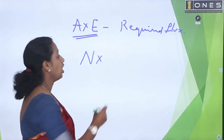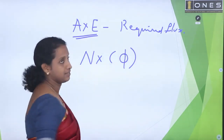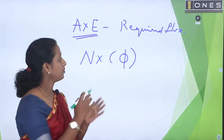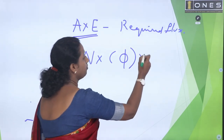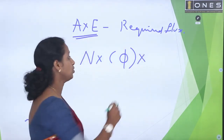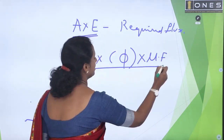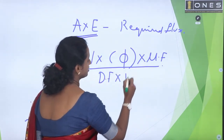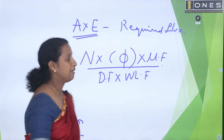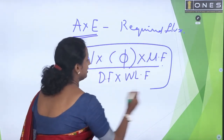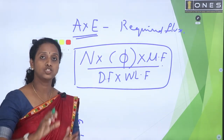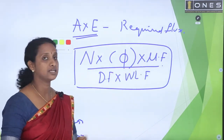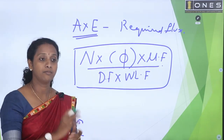Total produced flux is N into φ (phi) — number of lamps times lumens per lamp. To find how much flux actually reaches the working plane, we multiply by the utilization factor and divide by the depreciation factor and waste light factor. These three factors ensure that N into φ, after adjustments, reaches the working plane.